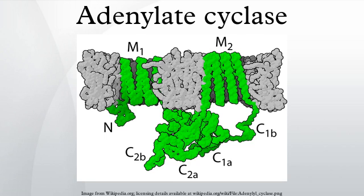Class II ACs are toxins secreted by pathogenic bacteria such as Bacillus anthracis and Bordetella pertussis during infection. These bacteria also secrete proteins that enable the AC to enter host cells, where the exogenous AC activity undermines normal cellular processes. The genes for class II ACs are known as cyaA, and several crystal structures are known for class II enzymes.